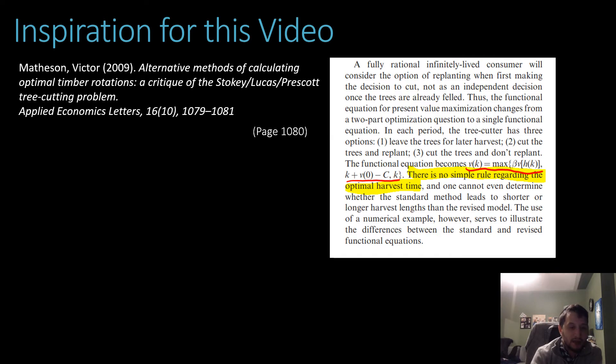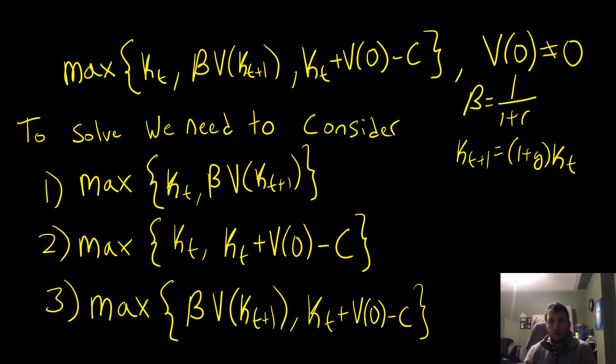see what that looks like. The problem we're looking at is where we're choosing to maximize this function. Our decision is to either cut down the tree without replanting it, denoted by kt here, let the tree grow for another period discounted by beta, or cut down the tree and replant it, picking up this vacancy value. In order to